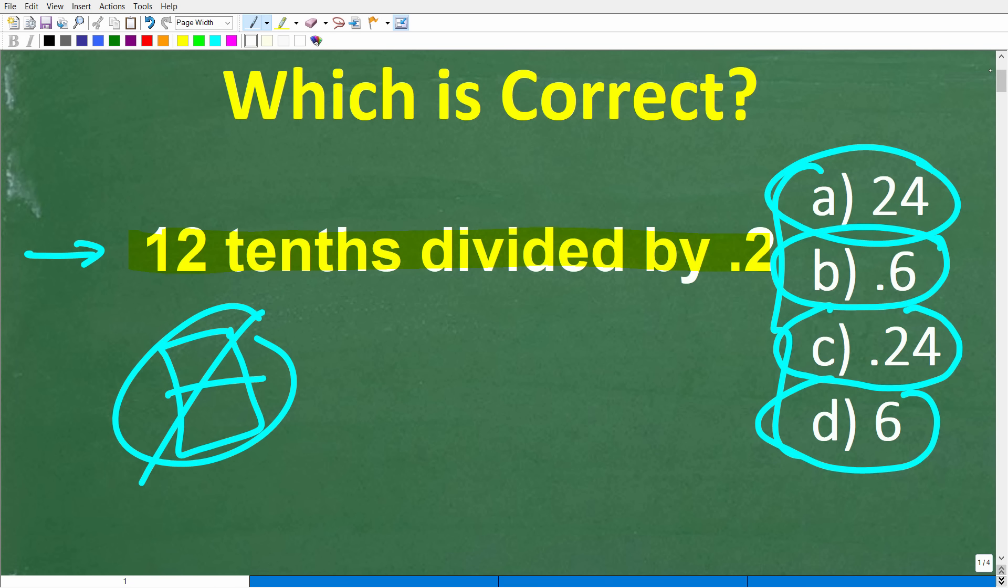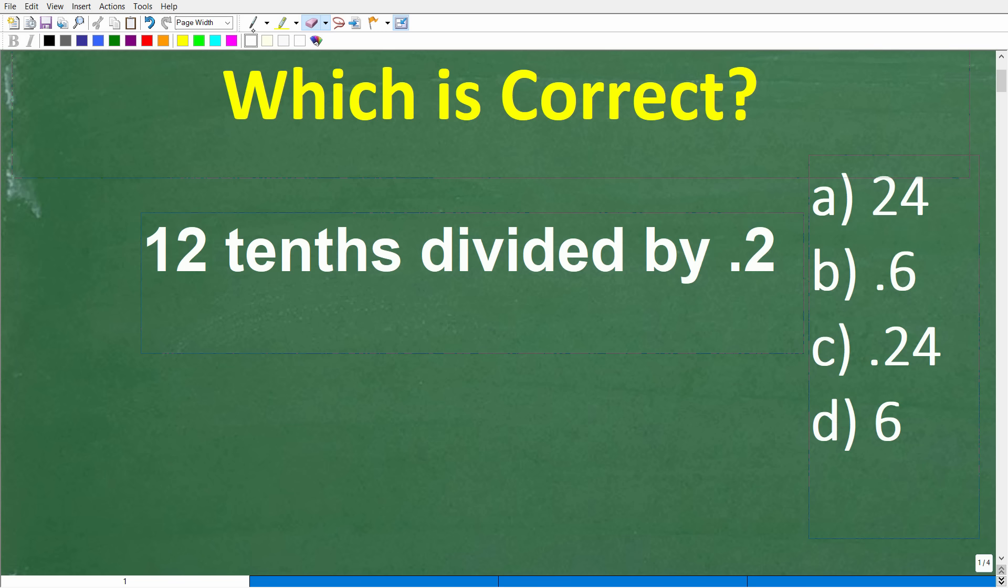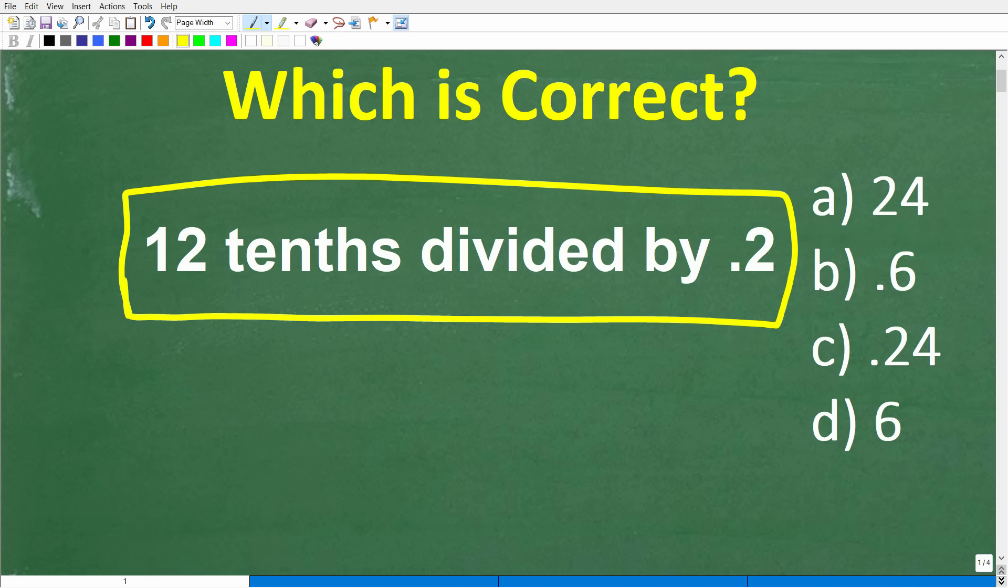Now before we show you the answer, let's take one more look at the problem and answer choices. We have 12 tenths divided by 0.2. Now if you're saying you totally forgot this stuff because this was way back like 40 years ago in fourth grade, I totally get that. You're going to have to remember this math stuff that you learned way back in elementary school.